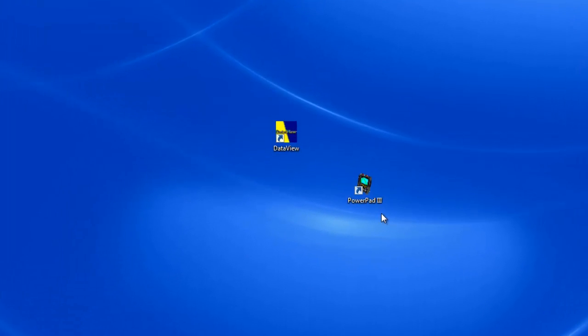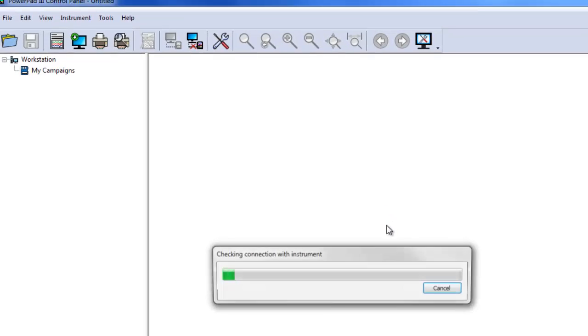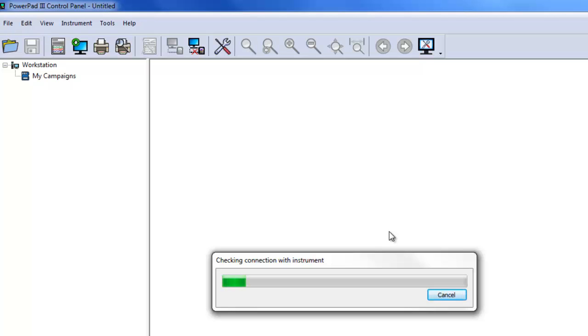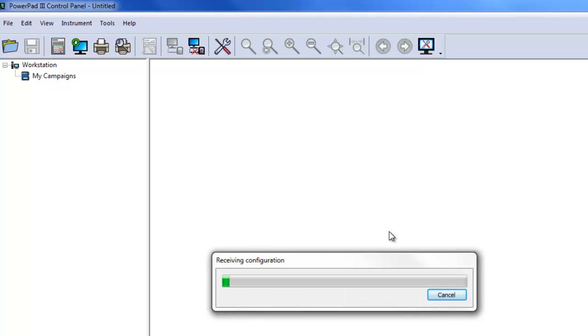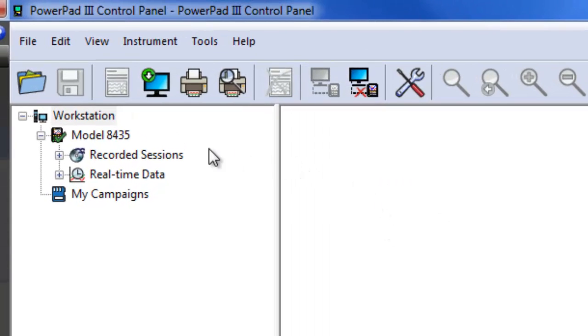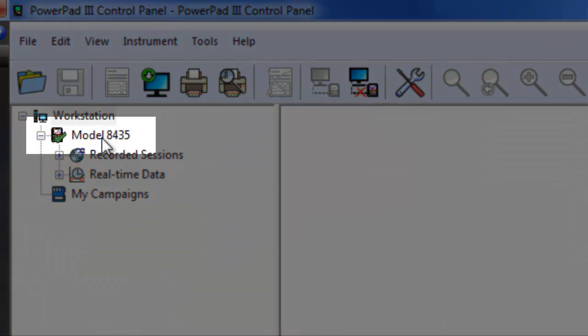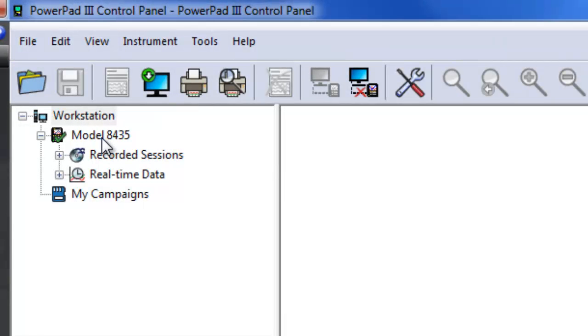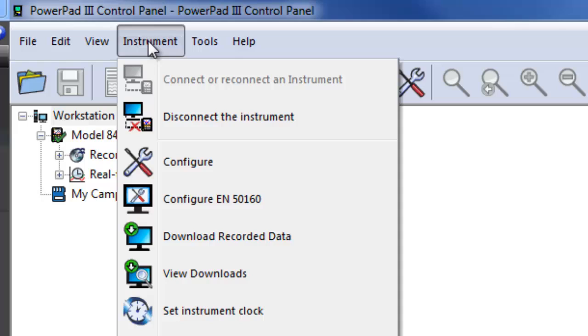Start up the PowerPad 3 control panel by clicking its icon on your desktop. Ensure that your instrument is connected by looking for the green checkmark next to its name in the navigation frame. If a red X appears instead, connect the instrument now by clicking Instrument on the menu bar and selecting the option Connect or Reconnect an Instrument.